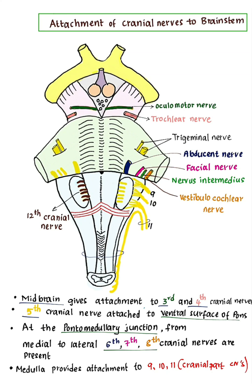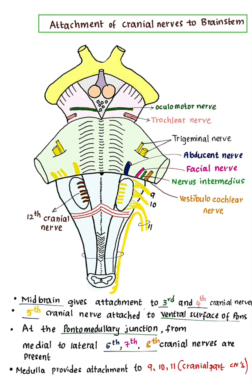In this video, we are going to learn about the attachment of cranial nerves to the brainstem. Out of 12 cranial nerves, 10 cranial nerves are attached to the brainstem.